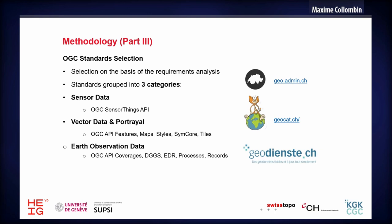We based the OGC standard selection and requirement analysis on the main Swiss initiatives: the Swiss GeoPortal, the GeoCAT based on GeoNetwork for metadata dissemination services, and geodienste.ch, which stands for the Conference of Cantons on GeoInformation, and which basically allows you to distribute all of the cantonal data.